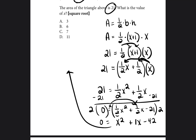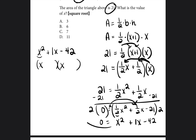Now we have x² + x − 42 = 0. We're going to factor this into two binomials. We need two numbers that multiply to give negative 42 and add to give positive 1 (the middle coefficient). Negative 6 and positive 7 multiply to negative 42, and negative 6 plus positive 7 equals positive 1. So negative 6 and positive 7 are the two numbers that go inside the binomials: (x − 6)(x + 7) = 0.